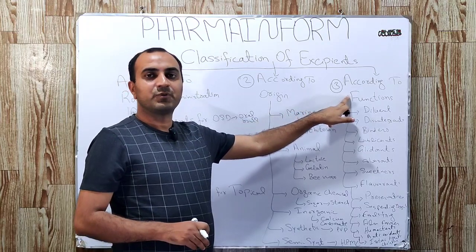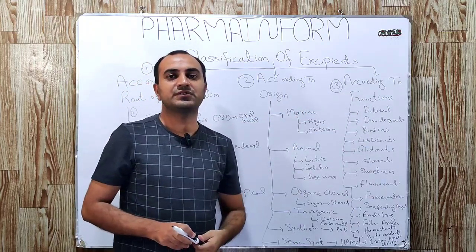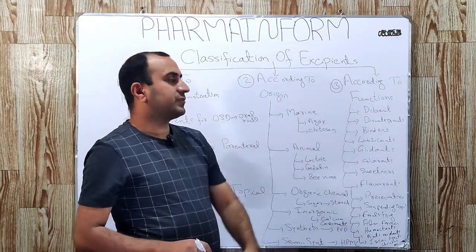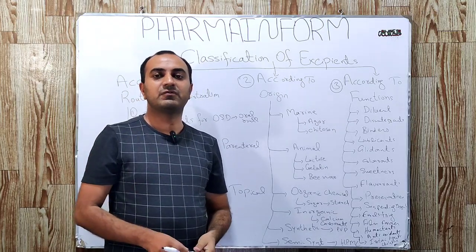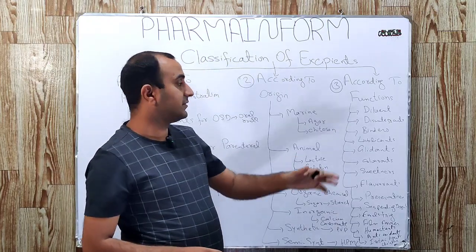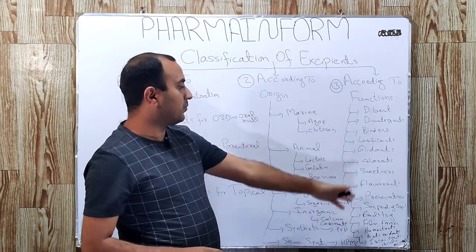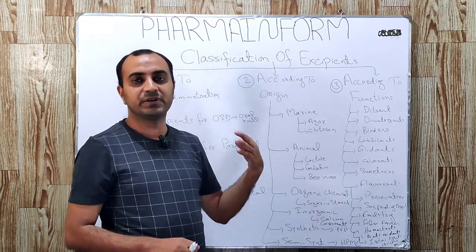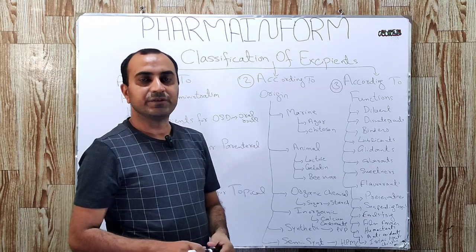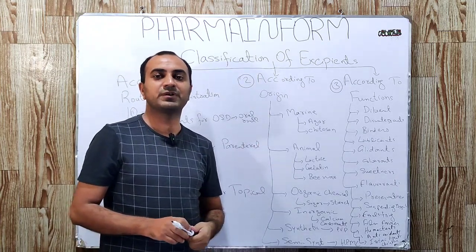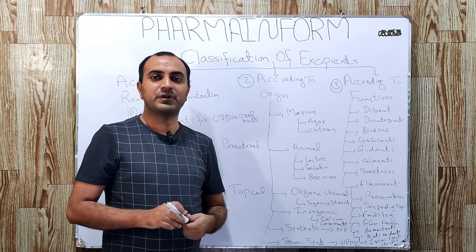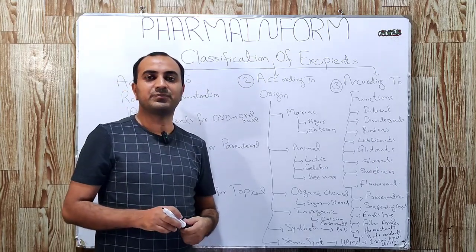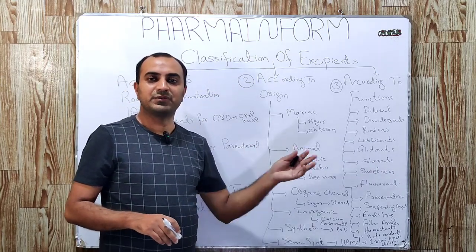We will proceed with our playlist according to this functional classification system. In the next videos, we will discuss each subclass in detail — what are the diluents, what are the examples of diluents, and we will discuss each diluent in detail. In the same manner, we will discuss disintegrants, binders, their roles, concentrations, examples, and incompatibilities — everything will be covered in this playlist. If you have not subscribed to my channel, please press the subscribe button. If you have any confusion, ask in the comment box and also visit my website farminform.com. Till the next video, Allah Hafiz.